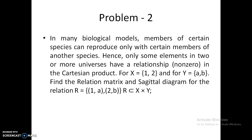Let us draw the relationship matrix. The elements of the first set — 1 and 2 — are written on the left side, and for Y, a and b are written across the top. Checking the relation: 1 and a have a relationship, so the value is 1. Between 1 and b there is no relation, so it is 0. Between 2 and a there is no relation, so it is 0. Between 2 and b there is a relationship, so the value is 1.